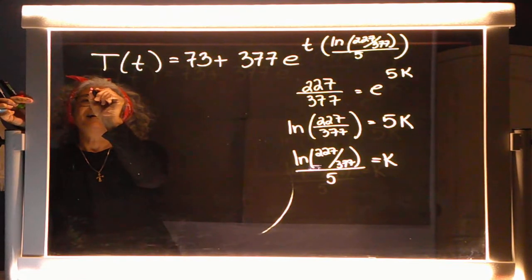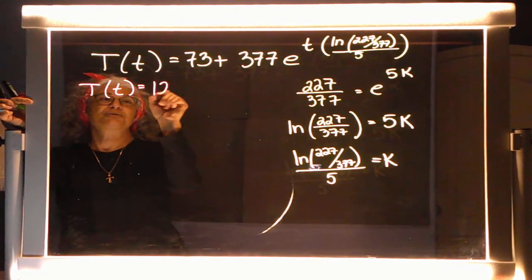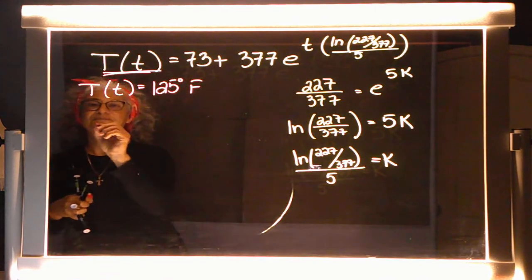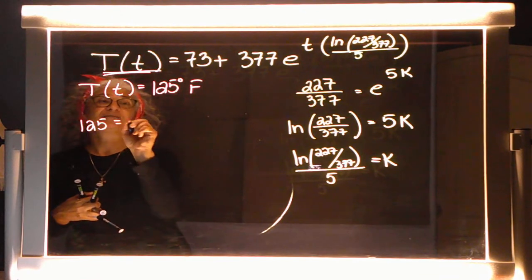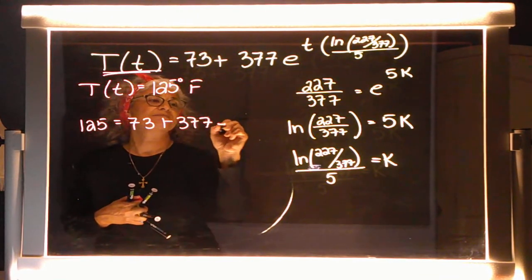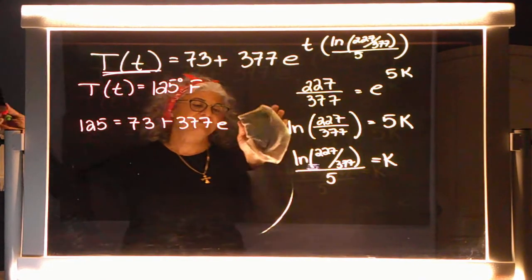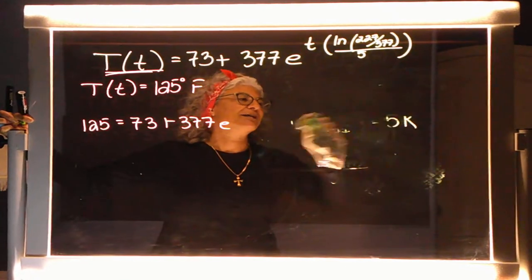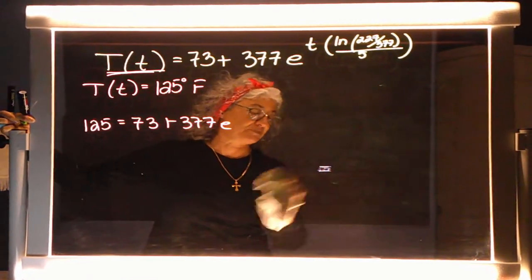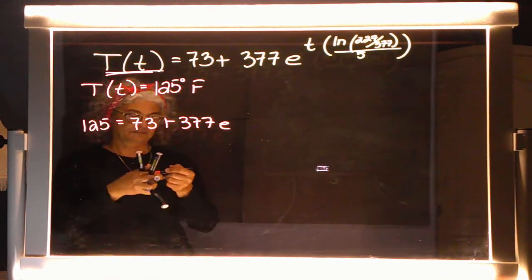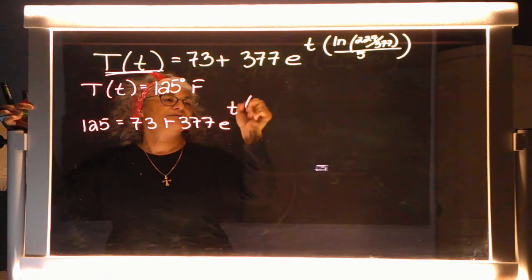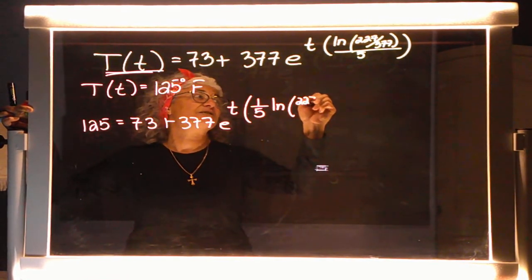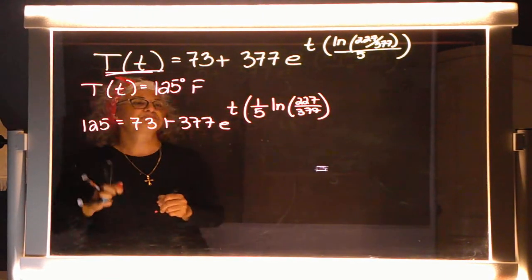So, my ending temperature is 125 degrees Fahrenheit. That's the ending. So, let's plug it in. Because I'm looking for time. So, 125 equaling my specific formula. And, yes, it does help to just write it as 377 versus the parentheses. I already have to write my rate, which is going to take some space. So, I'm looking for this time. And if I divide by 5, the same is multiplying by a fifth. So, I think I'm just going to write it that way to save myself some room.